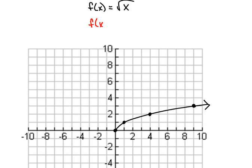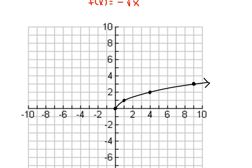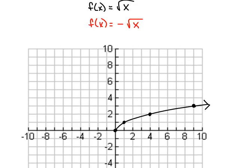Now let's see what happens if I were to put a negative in front of that square root, and take those exact same points again. If we have an x-value of 0, the square root of 0 would be 0, and putting the negative on it doesn't really change it — it's still 0. If I use the x-value of 1, the square root of 1 is 1, and the opposite of that would be negative 1. So when I use an x-value of 1, I've got a y-value of negative 1.